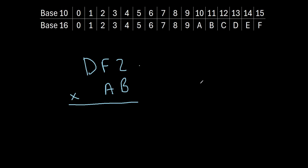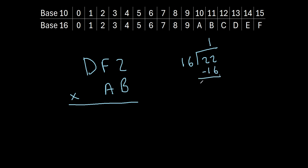Let's check out an example: DF2 times AB. We'll start just like normal multiplication — B times 2. Remember, B is equivalent to 11, so this is really 11 times 2, which is 22. Now the trick is, if we get a number greater than 16, we ask how many 16s go into that number. 22 divided by 16 is 1 with a remainder of 6. The remainder is written under the line, and the whole number, 1, carries to the next column.